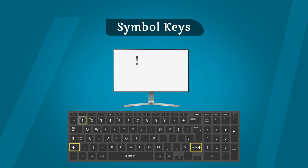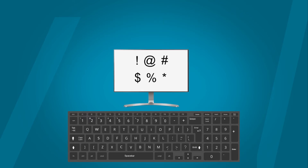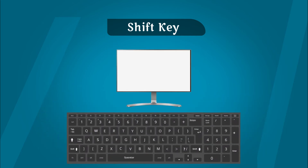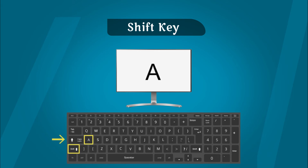आप इन keys का use number key के साथ shift press करके कर सकते हैं। Shift key: Shift key का use दूसरी keys के different purpose के लिए किया जाता है। अगर आप shift key को किसी letter key के साथ press करते हैं तो यहाँ उस letter को capital में टाइप करेगा, अगर आपका caps lock off हो तब भी। Example: Shift + A = capital A जब caps lock off हो; Shift + capital A = small a जब caps lock on हो।